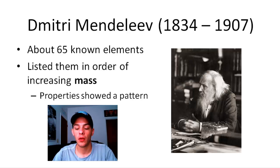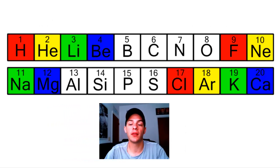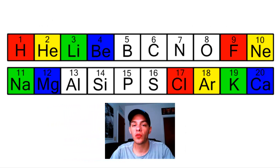So if we take the first 20 elements of the periodic table and do sort of the same thing that Mendeleev did, these are the first 20 elements: hydrogen, helium, lithium, beryllium, boron, carbon, nitrogen, oxygen, fluorine, neon, sodium, magnesium, aluminum, silicon, phosphorus, sulfur, chlorine, argon, potassium, and calcium.